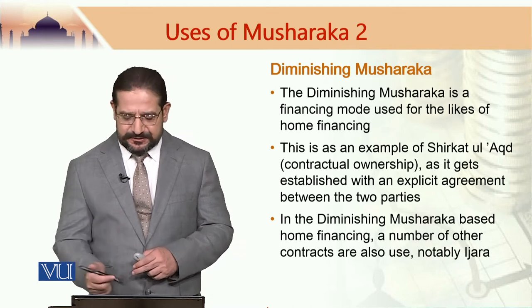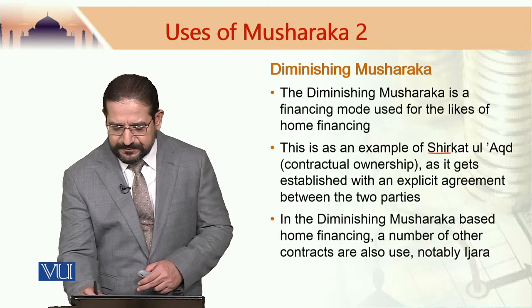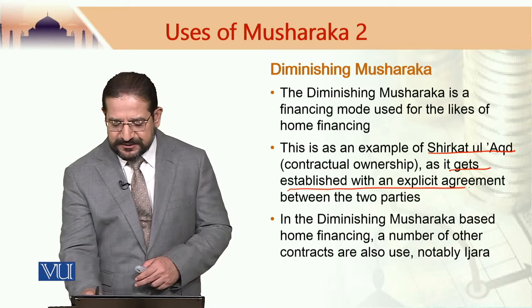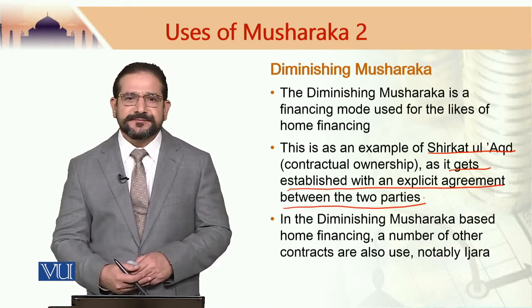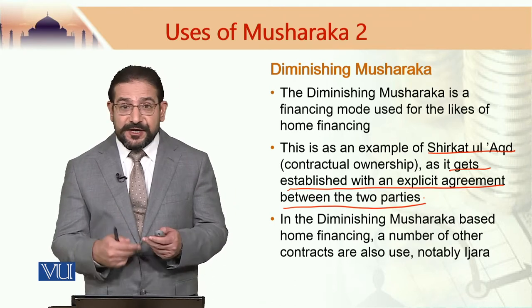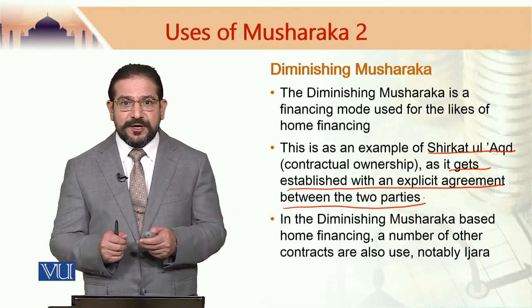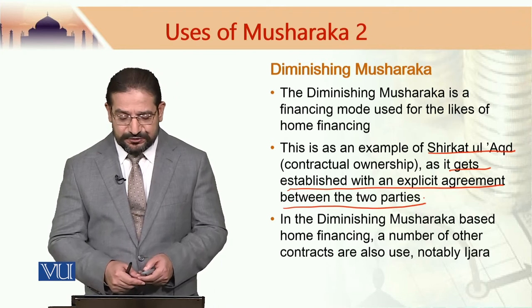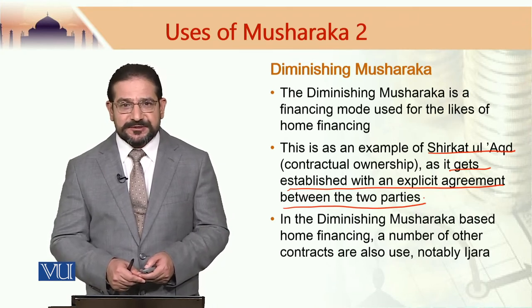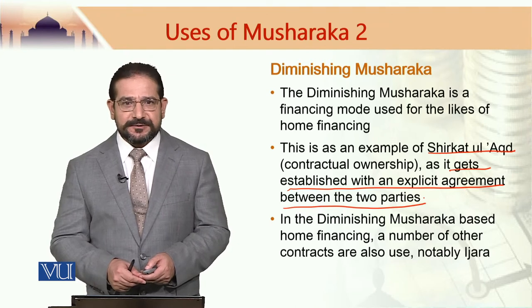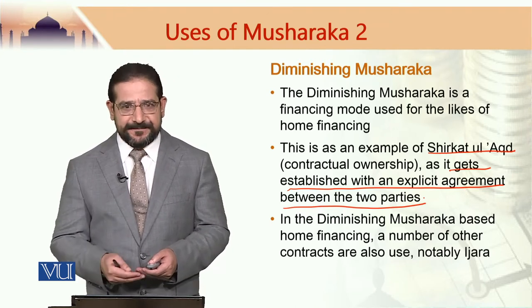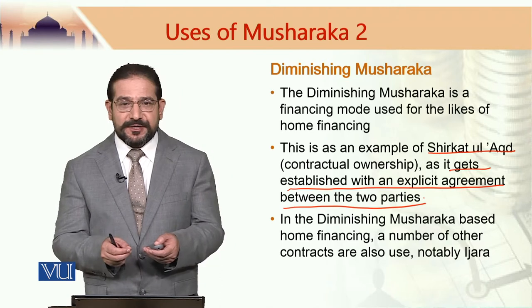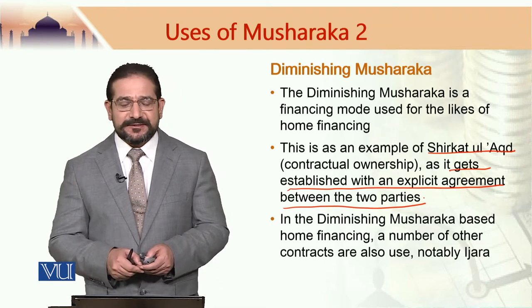Diminishing Musharaka in this context is an example of Shirkatul Aqt, which gets established with an explicit agreement between the two parties. In case of Shirkatul Mill, there is no explicit contractual arrangement between the parties. However, in case of Shirkatul Aqt, there is an explicit contractual arrangement between the partners, and there must be such an arrangement before a Shirkatul Aqt gets established.